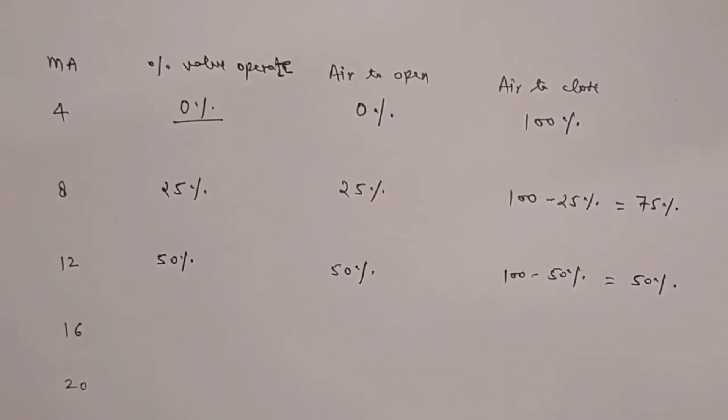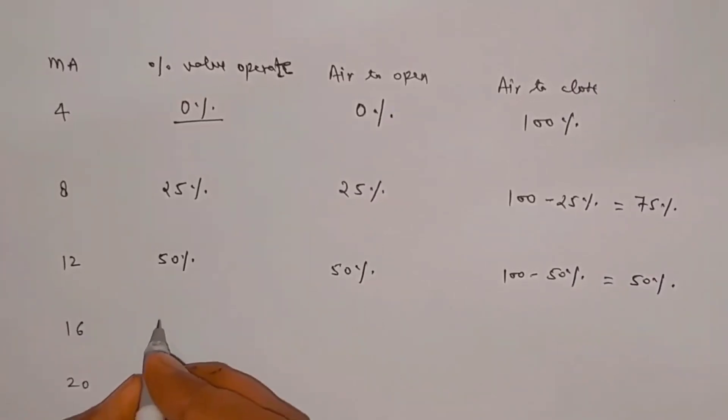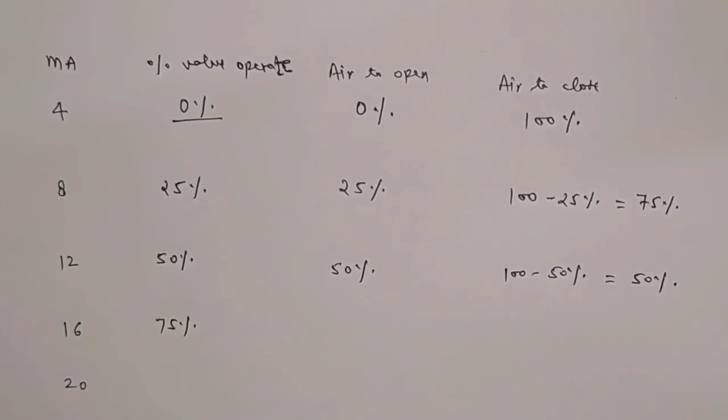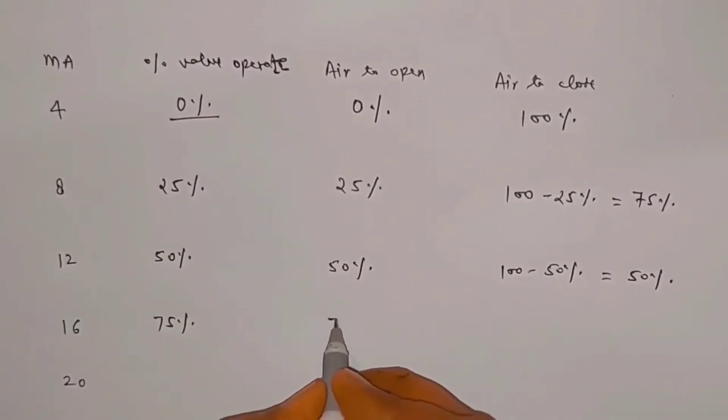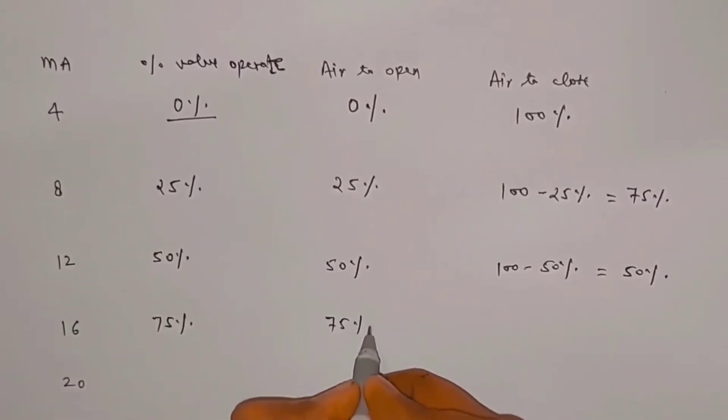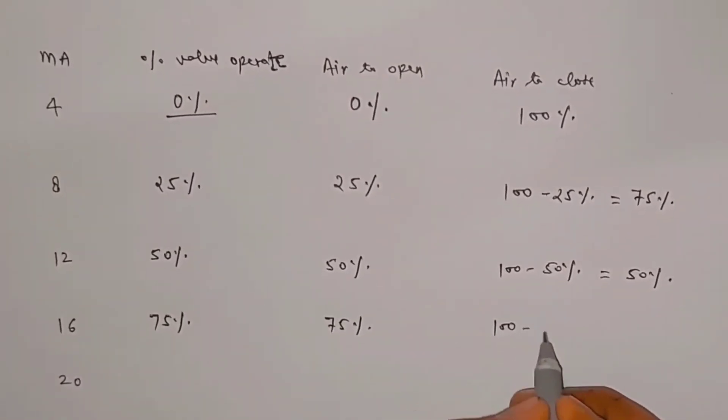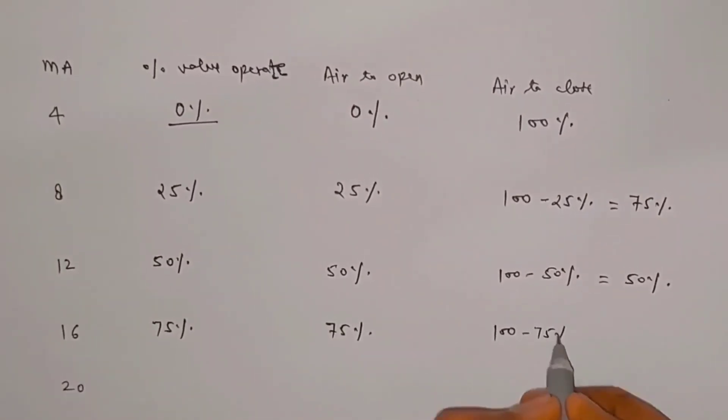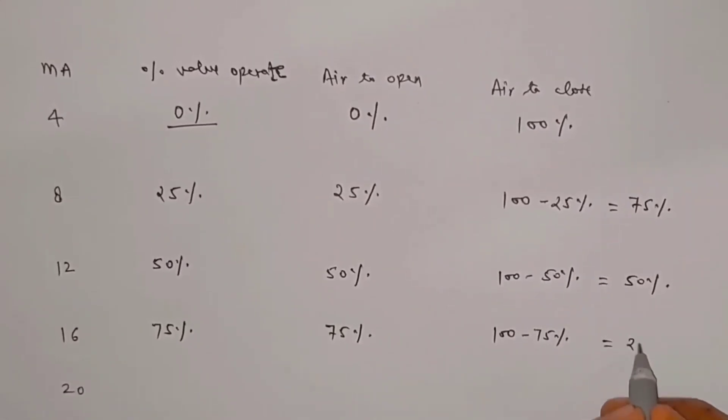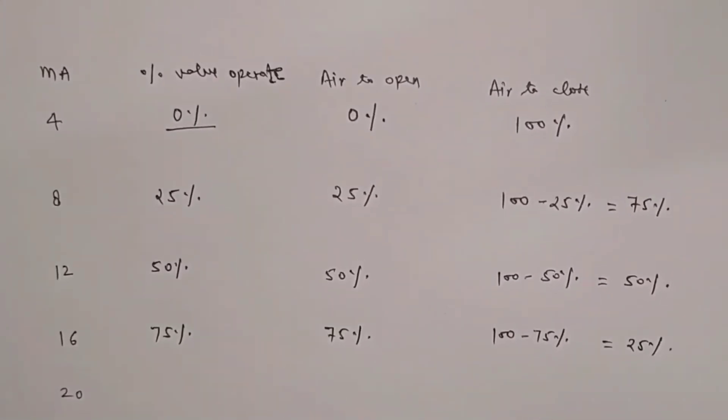Similarly, at 16 milliamp pairs signal, valve operate percentage is 75%. So air to open control valve opening will be 75%. And air to close control valve opening will be 100 minus 75%, so it will come 25%.